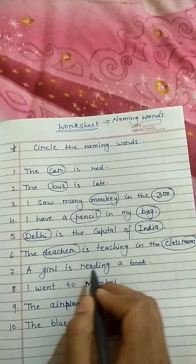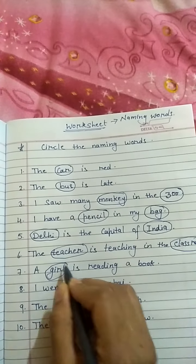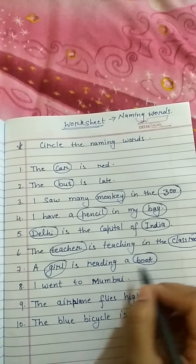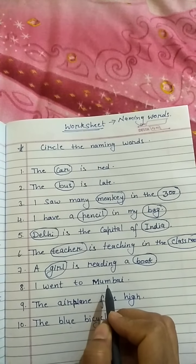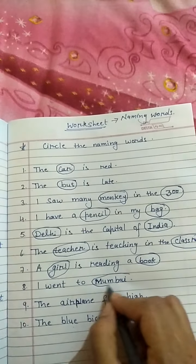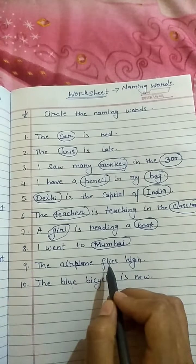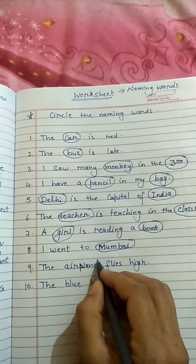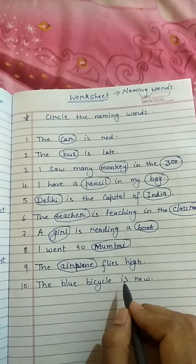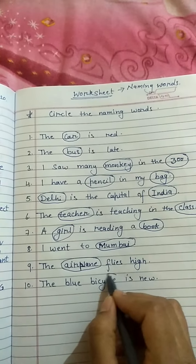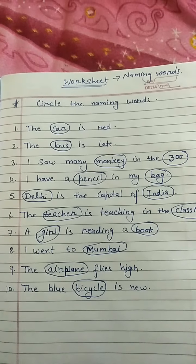Next: a girl is reading a book — girl is the name of a person and book is a thing, so both are naming words. I went to Mumbai — Mumbai is the name of a place, so we circle it. The aeroplane flies high — aeroplane is the name of a thing. The blue cycle is new — cycle is also the name of a thing. So this is the exercise we completed.